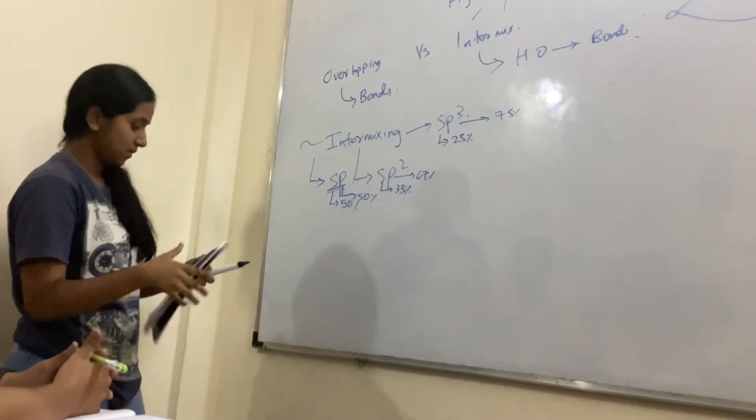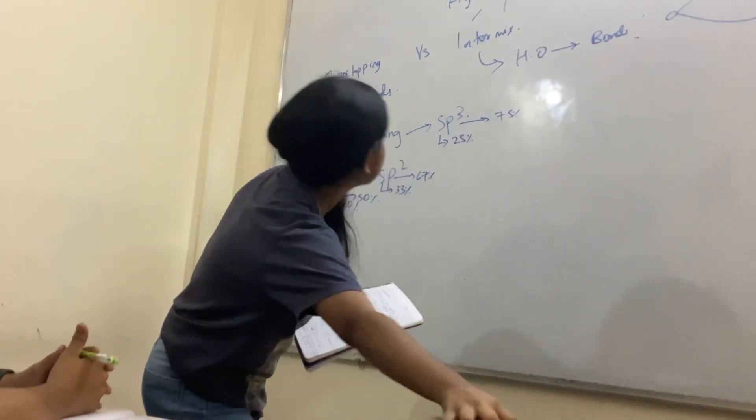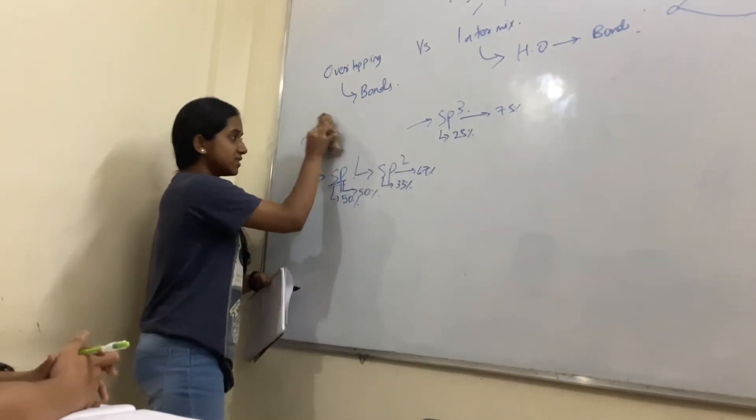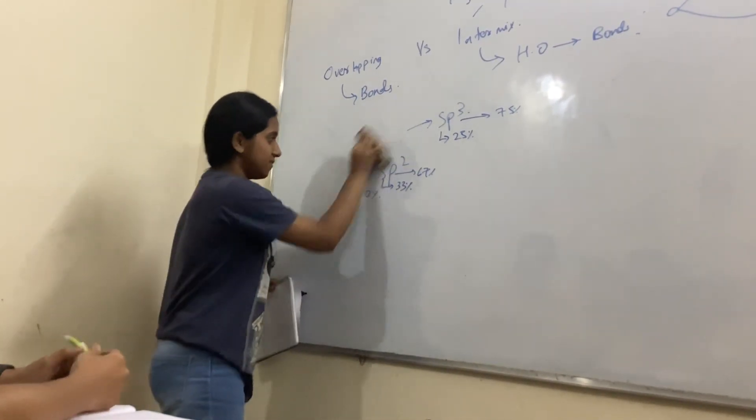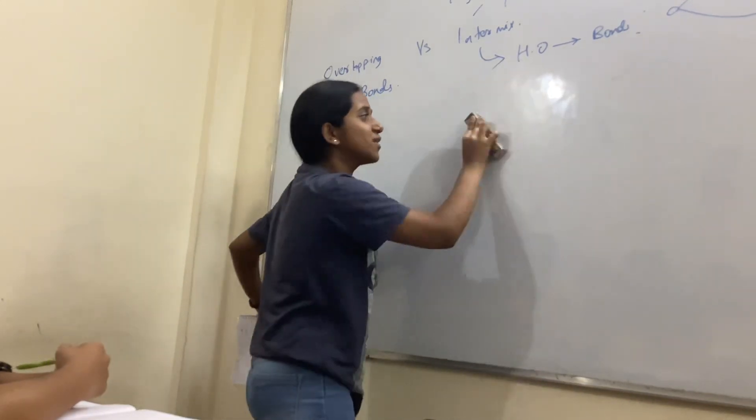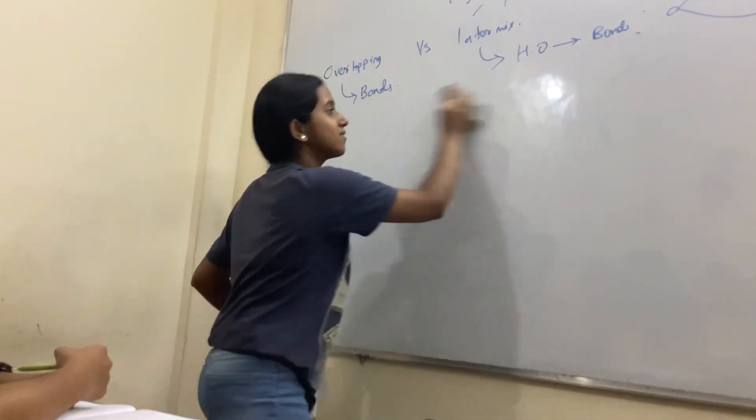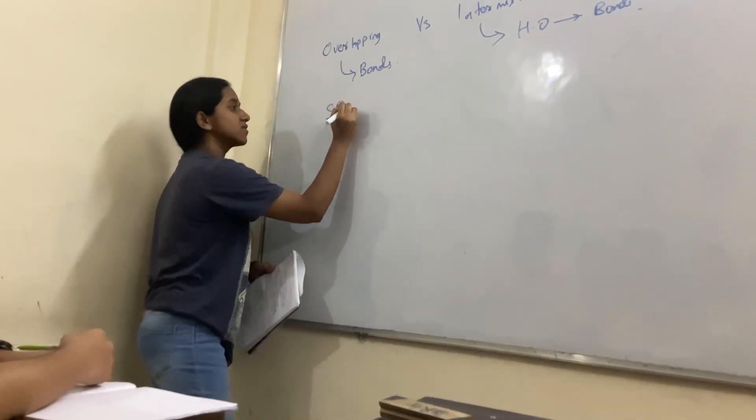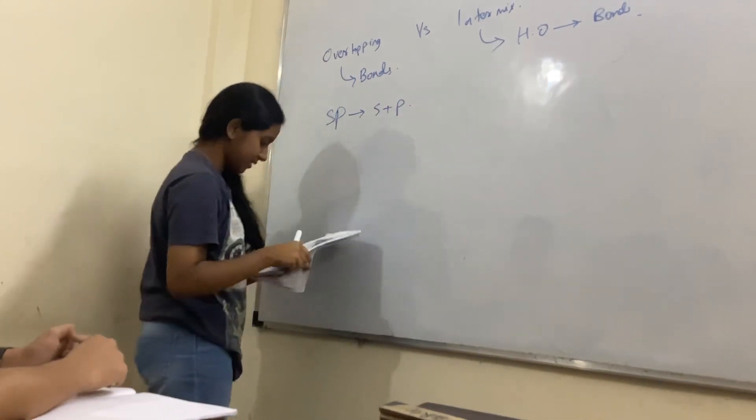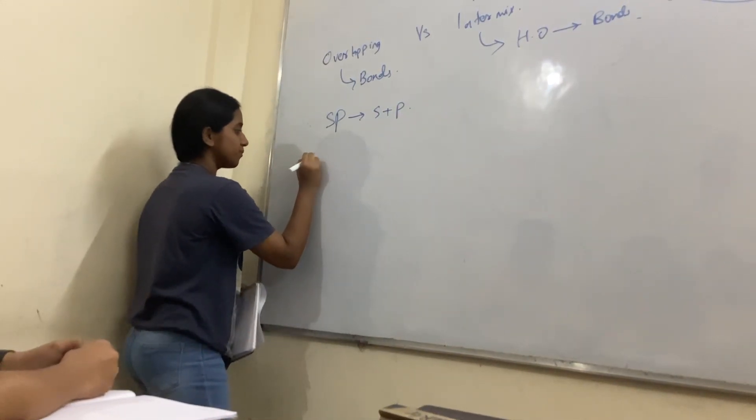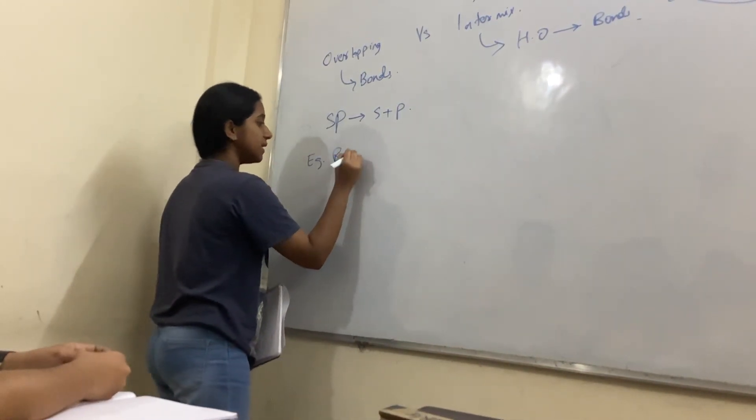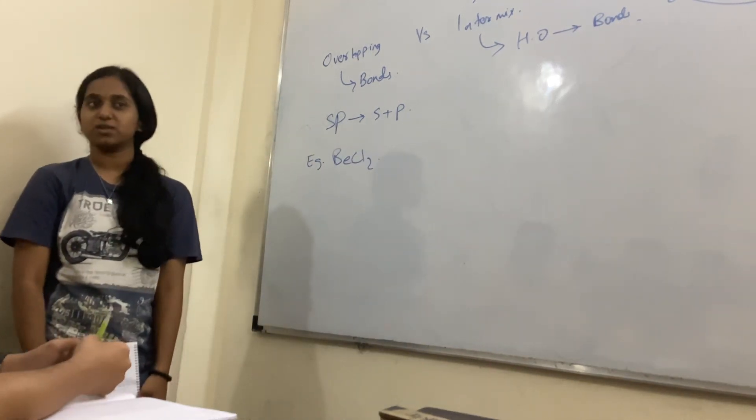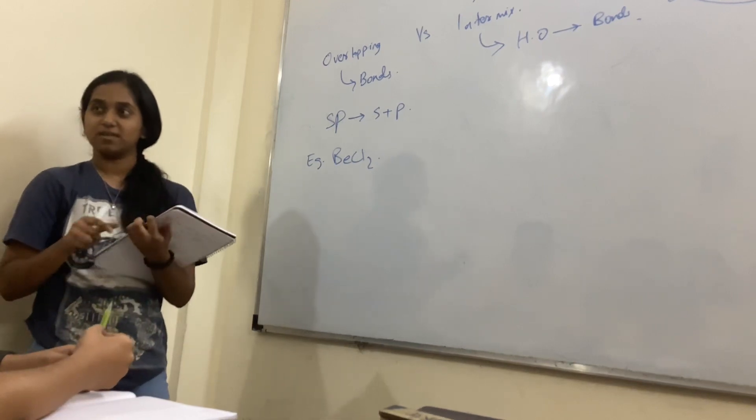Does it matter? Let's take an example. This is BCl2. What is the electronic configuration of Boron?